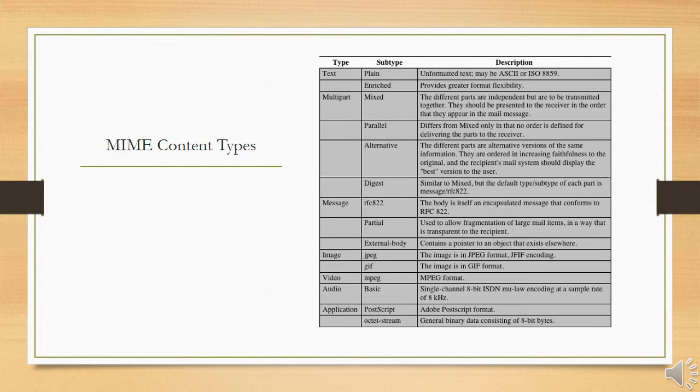In full meaning of the text, aside from support of the indicated character set, the primary subtype is plain text, which is simply a string of ASCII characters or ISO 8859 characters. The enriched subtype allows greater formatting flexibility.